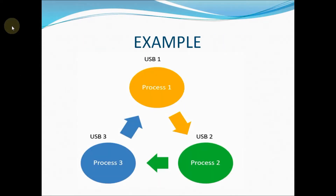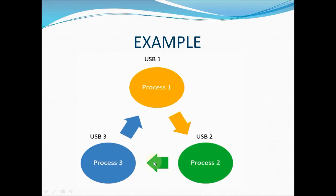I am considering three processes: process 1, process 2, and process 3. Each process is using a resource type USB. Process 1 is requesting a resource from process 3, process 2 is requesting a resource from process 1, and process 3 is requesting a resource from process 2. These three processes are in a deadlock state.